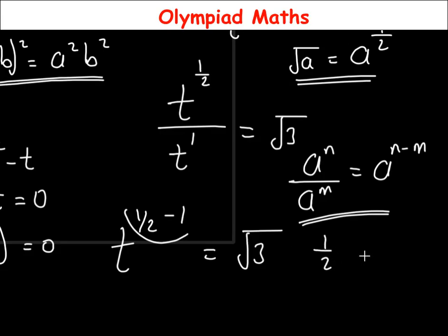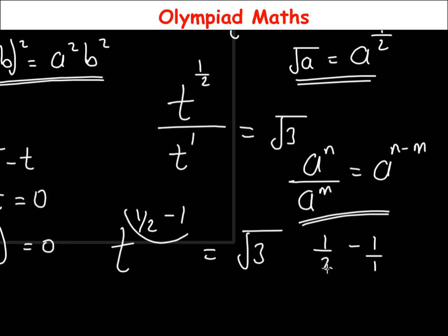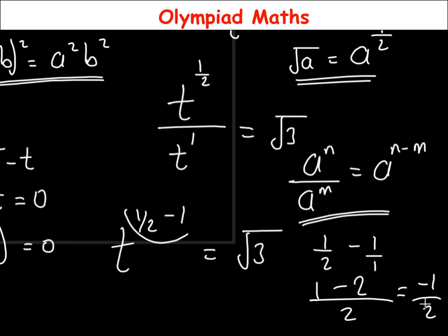Let's solve for the power: 1/2 minus 1. Writing 1 as 1/1, the LCM of 2 and 1 is 2, so we get (1 minus 2) over 2, which equals minus 1 over 2, i.e., minus 1/2. So t^(−1/2) equals √3.